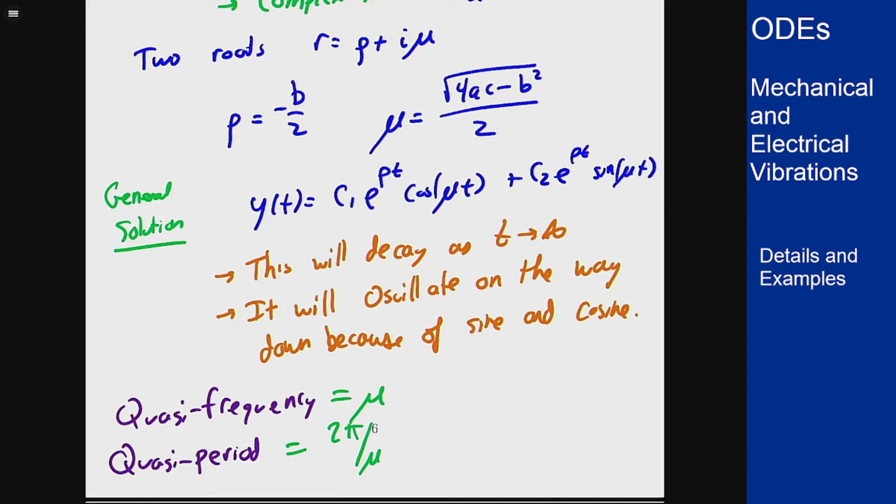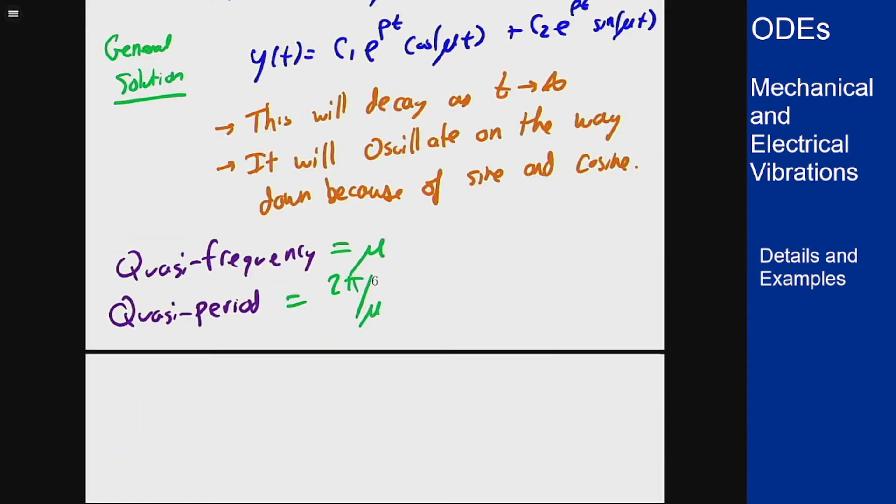So with this we have one other idea for how these graphs look and how we can draw them, that's the idea of envelope curves. But that comes about first when we decide to recombine this into a different form. So we can rewrite y(t) in the form Re^(ρt)cos(μt - φ)